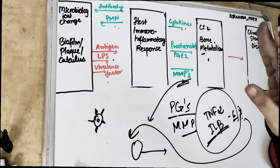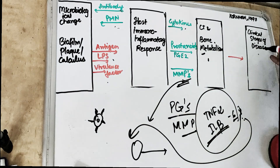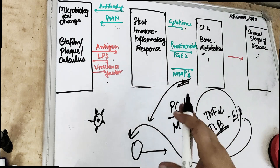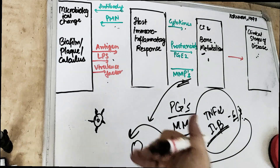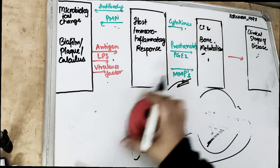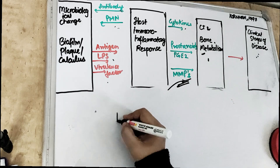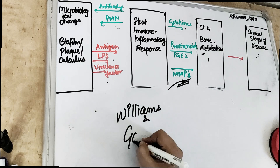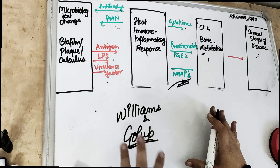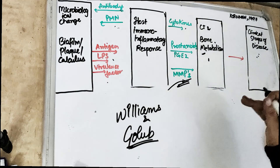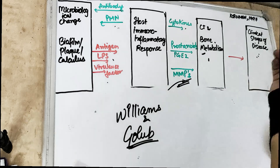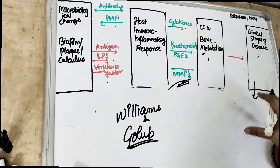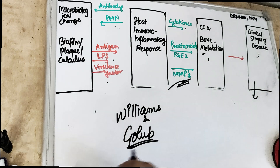Due to this inflammatory response, there is a clinical stage of periodontitis — periodontal destruction happening due to the body's response to bacteria. This concept of host modulation was given by Williams in 1990 and Golub et al. in 1992, and the periodontal disease model was given by Korman in 1997, showing how symptoms of periodontitis and destruction occur.